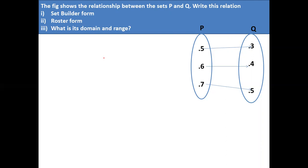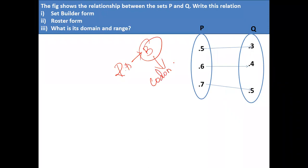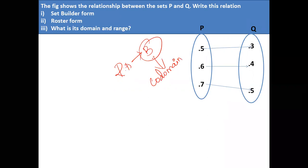The set of all second elements in a relation is called the range. Now, if R is a relation from A to B, then B is nothing but the co-domain. That is called as co-domain.